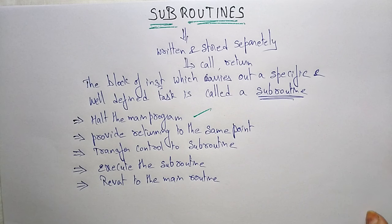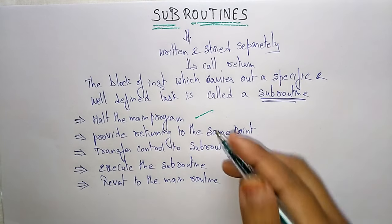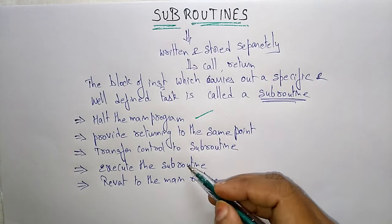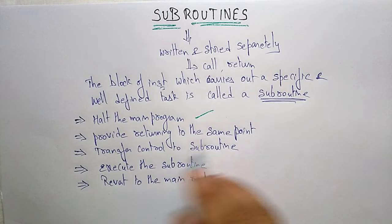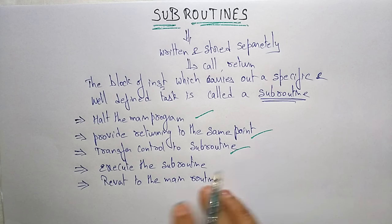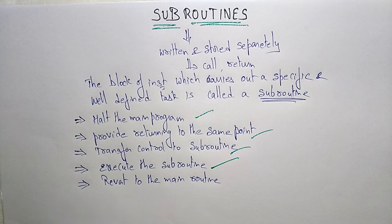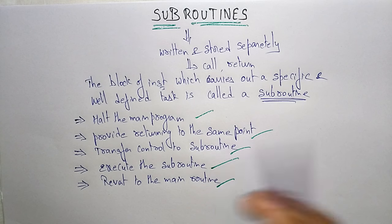So these are the different steps that take place whenever a subroutine is encountered in the main program. It first halts the main program, whatever instructions it is executing. It provides the return to the same point, transfers control to the subroutine, executes the subroutine, and after executing the subroutine, it comes back to the main program.